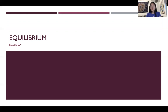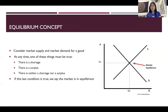Hey guys, so in the previous video we looked at market shortages and surpluses, but what happens if there is neither a shortage or a surplus? If that's the case, we say that the market is in equilibrium. If we look at the diagram, the market equilibrium is essentially the point of intersection between the supply and demand curves.